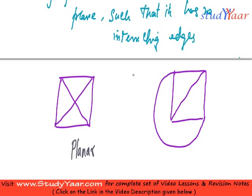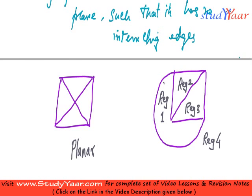Normally a planar graph is going to have your plane divided into regions. So this is region 1, this is region 2, this is region 3, and we have a region which is outside the graph. We call this region as a region with infinite area. So a planar graph divides the plane into regions such that it has one region having an infinite area.